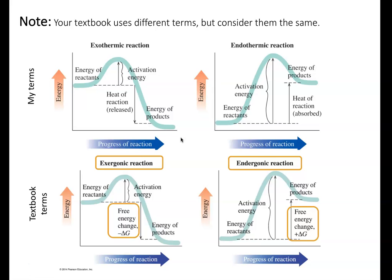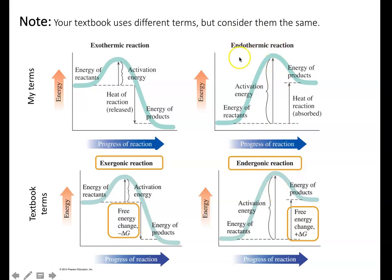A semantic note about your textbook: it uses the terms exergonic and endergonic instead of exothermic and endothermic. For this class, when you see exergonic in the textbook, just know it is basically equivalent to exothermic, and endergonic is roughly equivalent to endothermic. Similarly, if the textbook mentions free energy delta G, that's roughly equivalent to the heat of reaction delta H that we've been discussing.